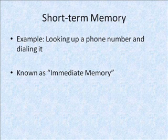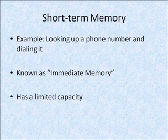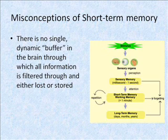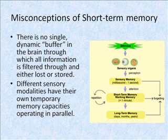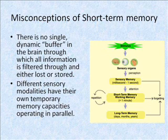Another term for short-term memory is immediate memory. Your short-term memory has a limited capacity. A common misconception of short-term memory is that it acts as a single dynamic buffer in the brain through which all information is filtered and either lost or stored. However, this is not the case — different sensory modalities have their own temporary memory capacities operating as parallel systems.